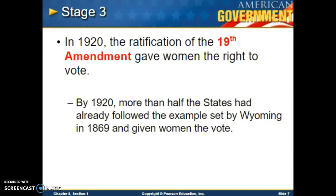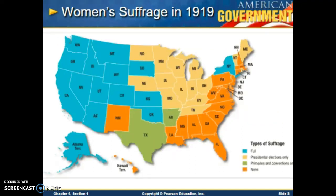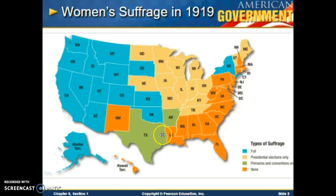Stage three: 1920, the ratification of the 19th Amendment gave women the right to vote. By 1920, more than half the states had already followed the example set by Wyoming in 1869 and given women the right to vote. Looking at the women's suffrage map from 1919, the western states allowed women to vote before 1920. Some states allowed voting in presidential elections only, and others allowed voting in primaries and conventions only, while the remaining states did not allow women to vote until the 19th Amendment.